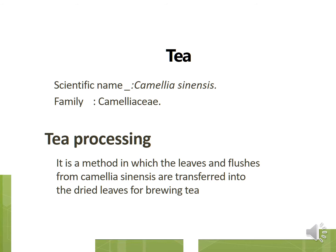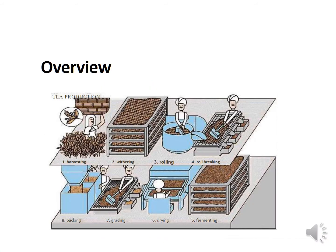Tea processing is a method in which leaves and flushes from Camellia sinensis are transformed into dried leaves for brewing tea. There are eight steps: first is harvesting, then withering, then rolling, then roll breaking, then fermenting, then drying, then grading, and the last one is packing.